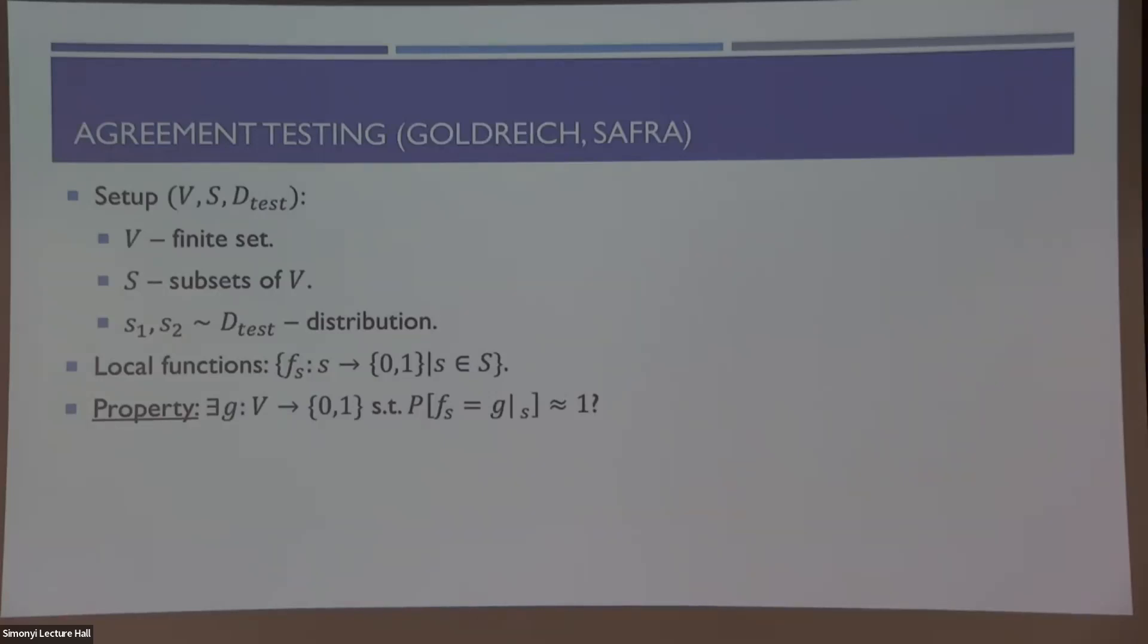They wanted to understand whether we can determine if the set of local functions have one function on the whole vertex set so that most of the local functions are actually restrictions of it. Here, when I'm writing this probability, I just mean the number divided by the total collection of subsets. Of course, if we actually read all these sets of input, we can maybe give a very accurate answer. But as we saw before, we really want to devise a super efficient algorithm that will randomly only probe a couple of these functions and already give an accurate answer to whether this property holds or not.